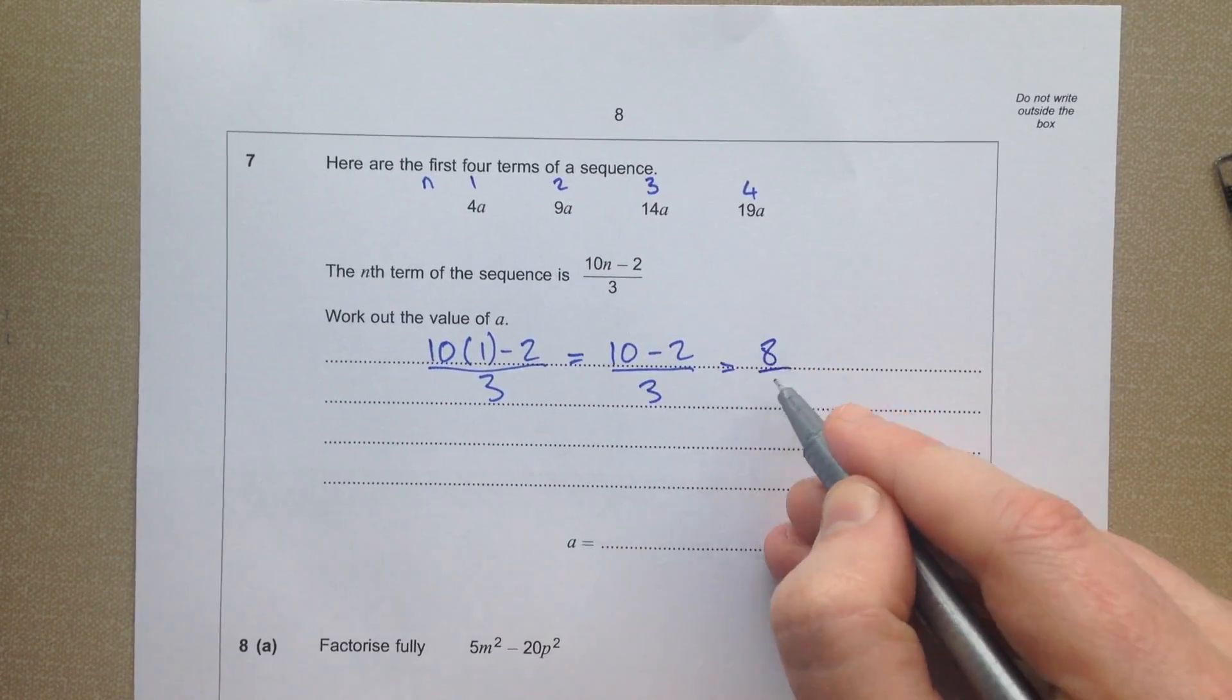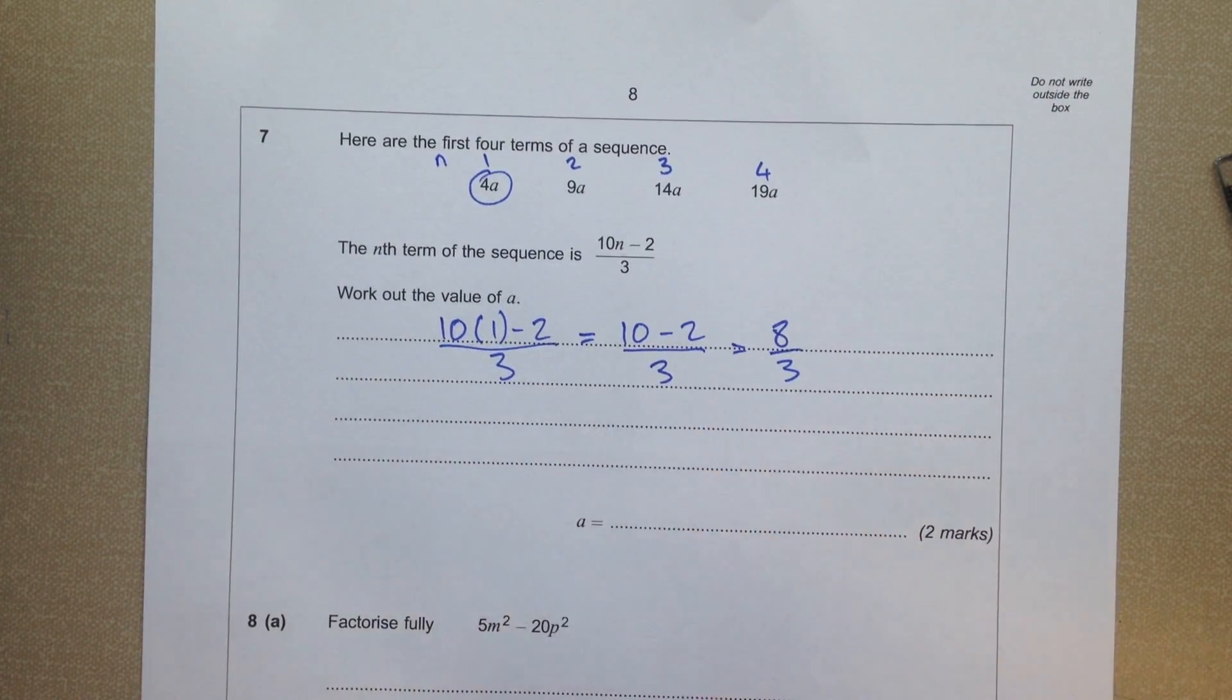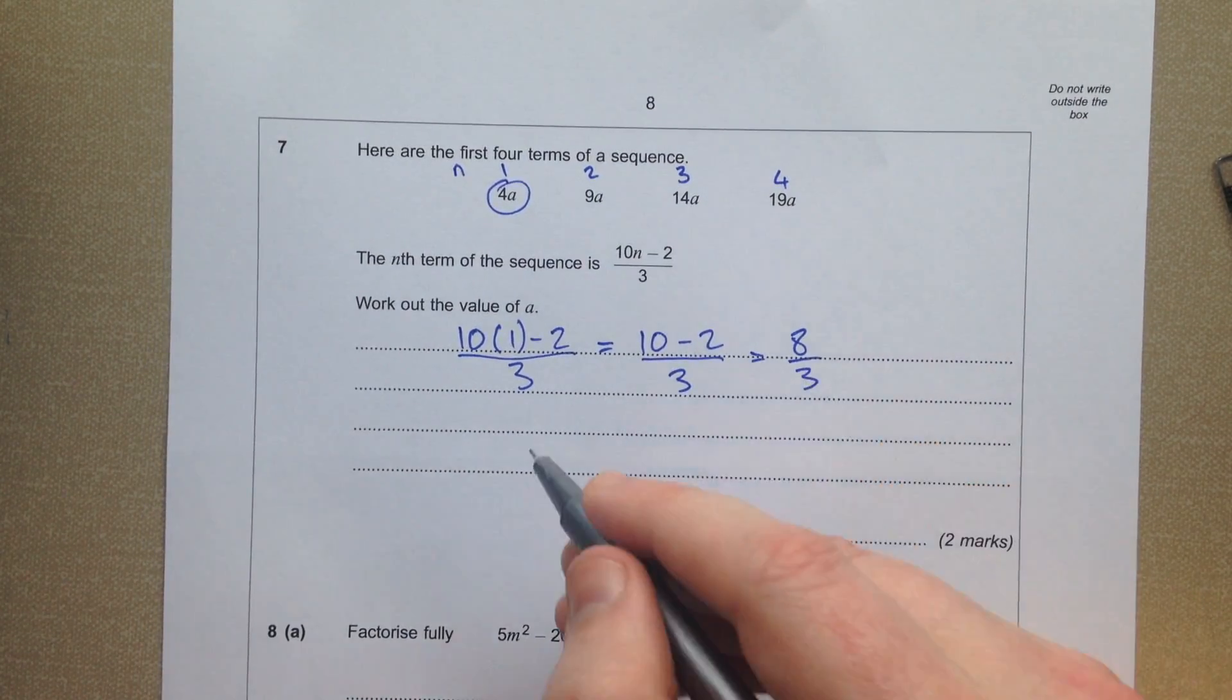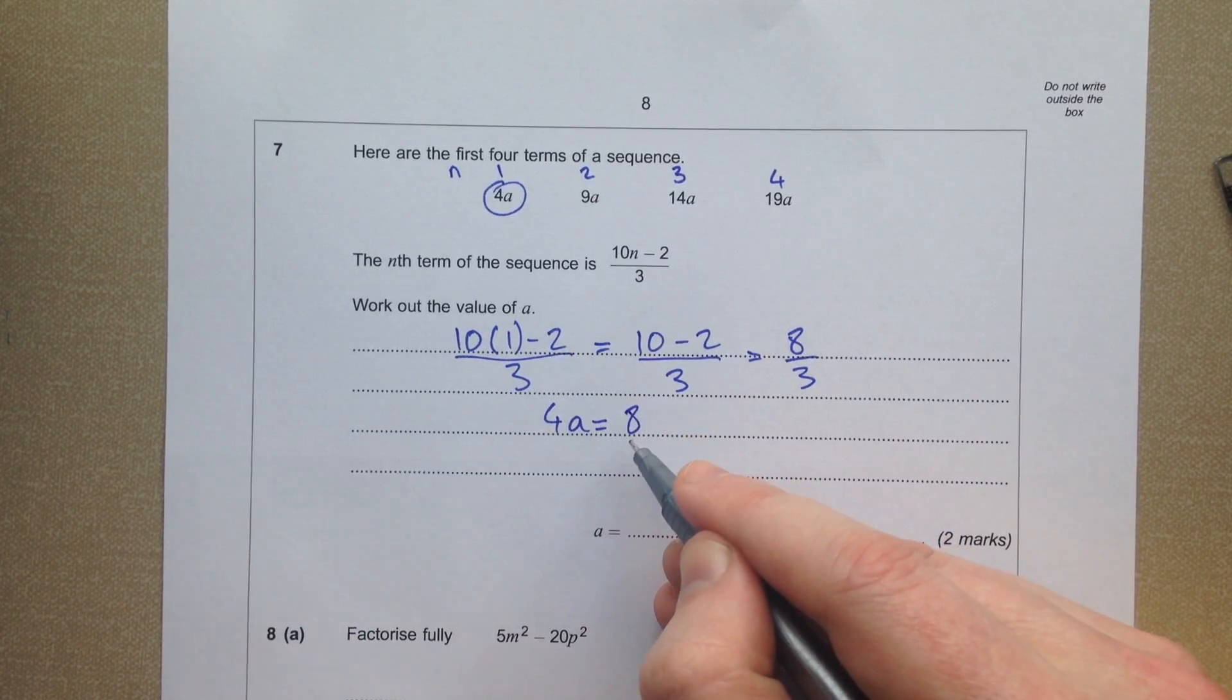So this here is the result of doing that nth term, so that is 8 thirds, so that means that 4a equals 8 over 3.